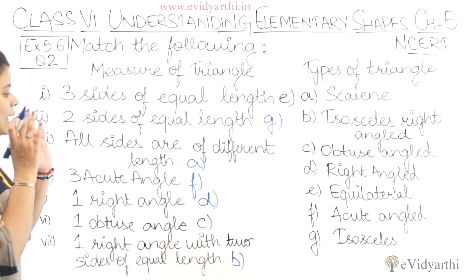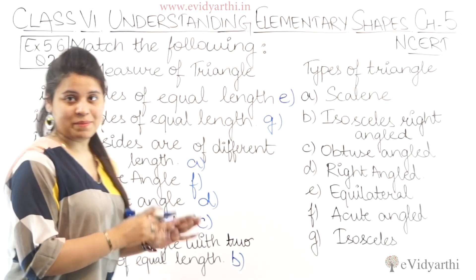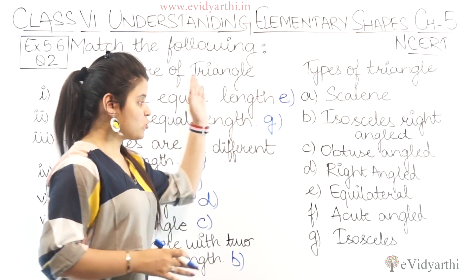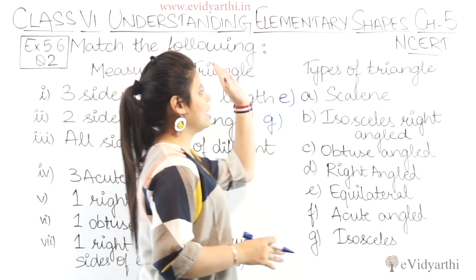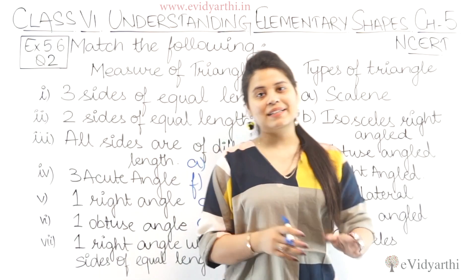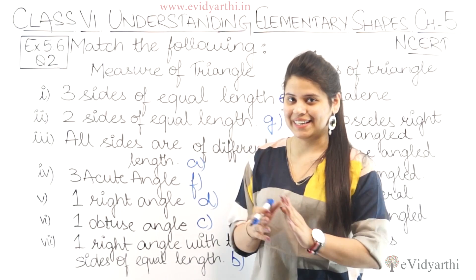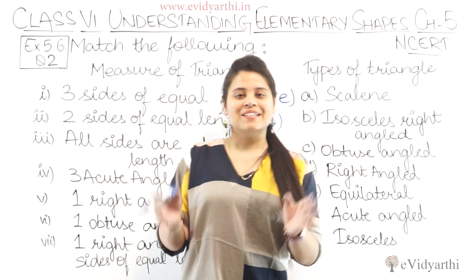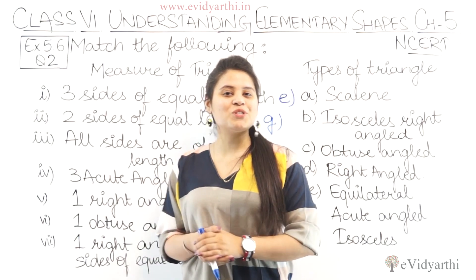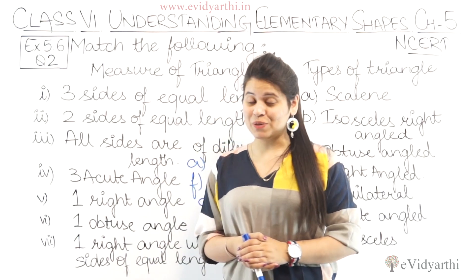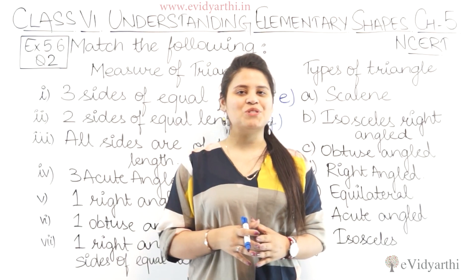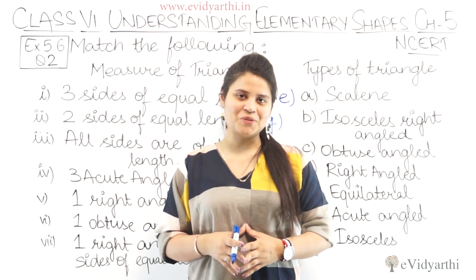So this is how we match these up. According to the measures, we judge the types of triangles. So this was question number 2 of exercise 5.6. Let's come to the next question.